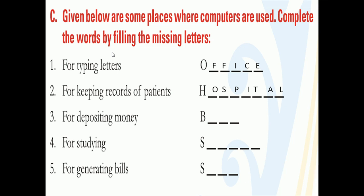Next: for studying, the first hint is given — computer is used in school, so the answer is school. Next: for generating bills, the first letter is given — bills are generated at a shop. We purchase many things from a shop, and computerized bills are generated there, so the answer is shop.